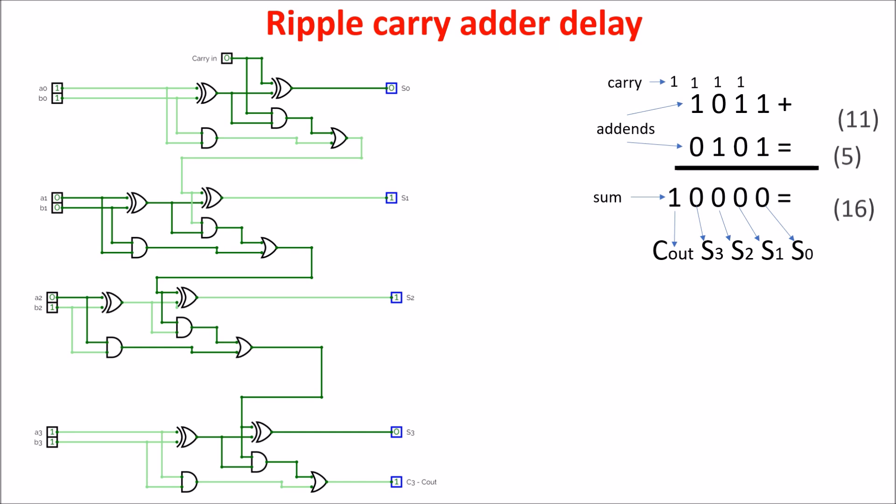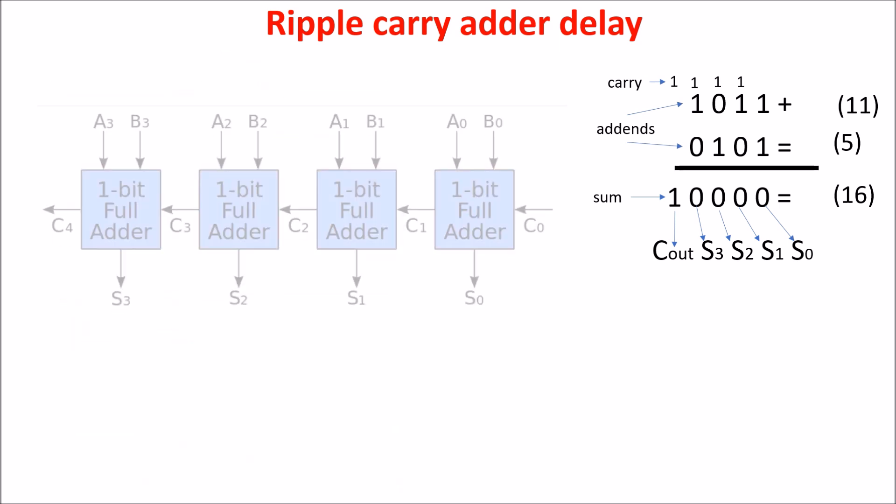In the example, we add 11 plus 5 equals 16. Sorting things out, we put the full adder in a box, and it becomes our elementary block. So the 4-bit Ripple Carry Adder becomes this one.